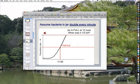It's half full at 11:59, one minute ago. So, very easy. It's doubling every minute. If it's full at 12 noon, then it was half full at 11:59.